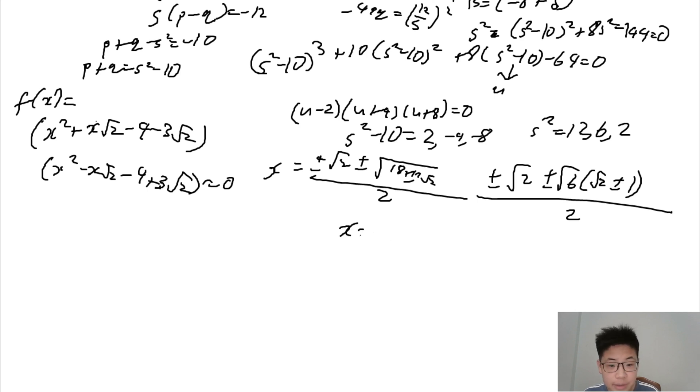So x equals -√2 plus √6, actually 4 of them are valid. So these would be ±√6 ± 2√3.